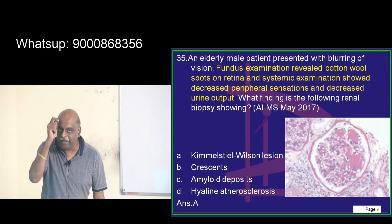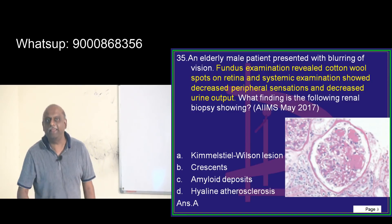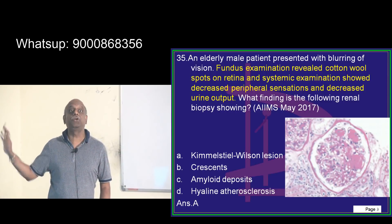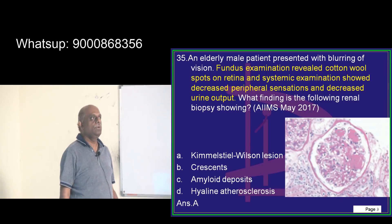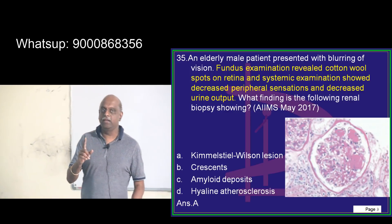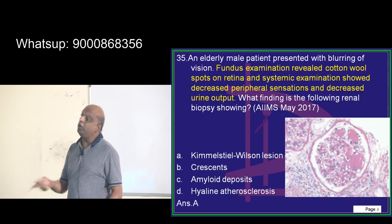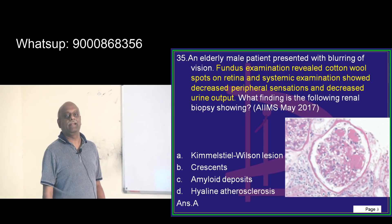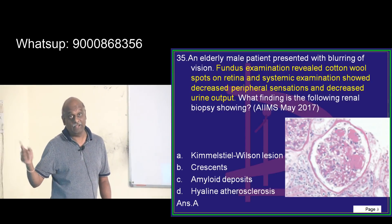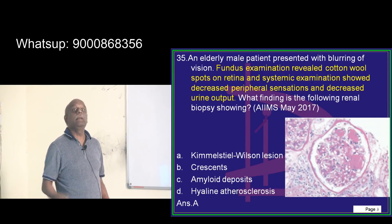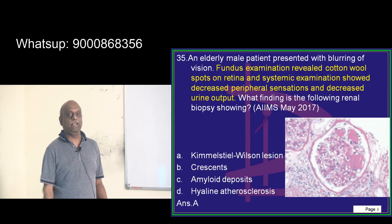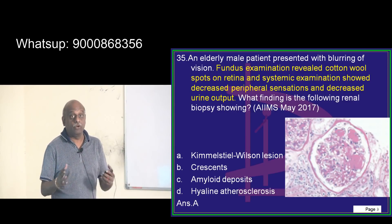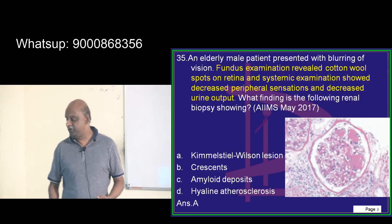If fundus retinopathy changes are not there, then the nephropathy is not due to diabetes. So diabetic nephropathy occurs only if retinopathy is also there — but diabetic retinopathy can still occur in people without nephropathy. That is the important relationship between nephropathy and retinopathy. Please don't forget.